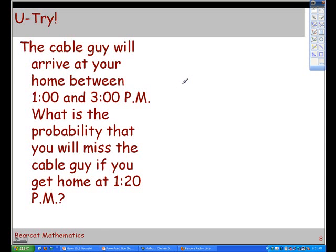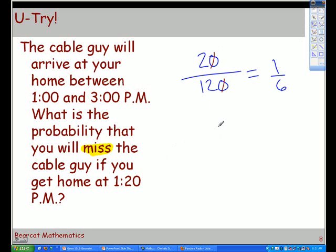We just said that probability is what we want to happen divided by what could happen. Right? So in this problem, what we want to happen is kind of worded weird because we don't really want to miss the cable guy. But that's the way the question is worded. So if we miss the cable guy, how many minutes of time could the cable guy come within in order for us to miss him? 20 minutes. And how many minutes of time is the cable guy scheduled to come in? Yeah, 2 hours is 120 minutes. So if we just reduce this out, we can knock out the zeros. That's dividing by 10. And then we can reduce the 2 twelfths. We're down to 1 sixth. 1 sixth is approximately what percentage. About 17 percent. So the probability that we're going to miss the cable guy if we get home late is 17 percent.